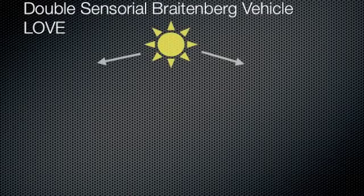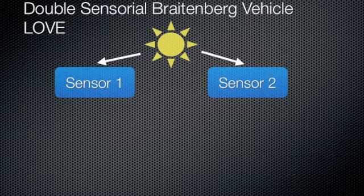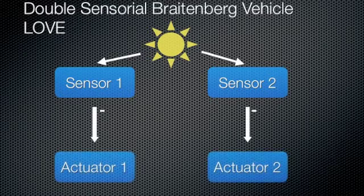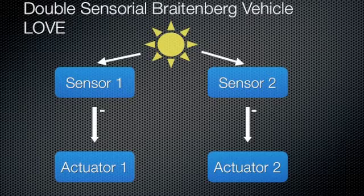Now I want to describe the first double sensory Breitenberg vehicle: love. The love vehicle has two light sensors. These sensors control the actuators indirectly proportional — the minus at the arrows indicates this. Furthermore, sensor 1 controls actuator 1 and sensor 2 controls actuator 2.